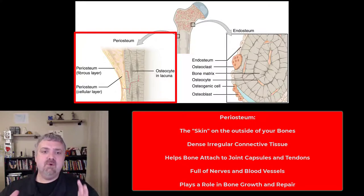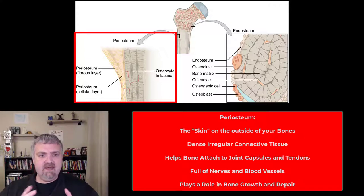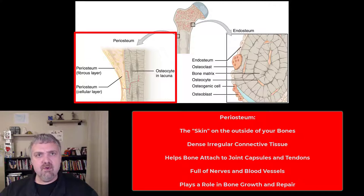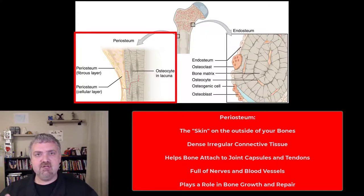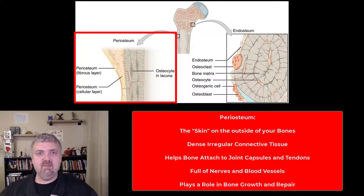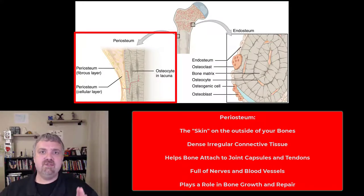The third function: the periosteum plays a role in bone growth and bone repair. We'll learn about bone growth later, but if there's a fracture, the osteocytes in this area can actually become osteoblasts and participate in bone repair. Those are the primary functions of the periosteum.